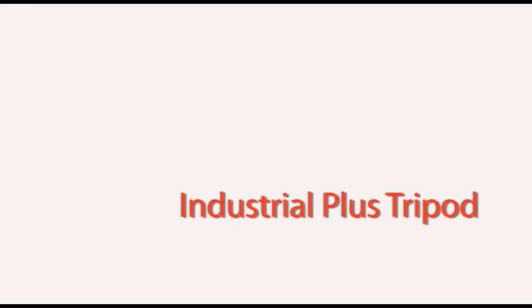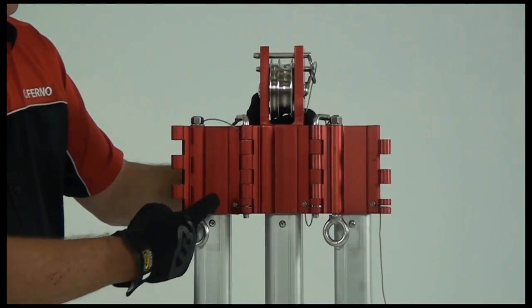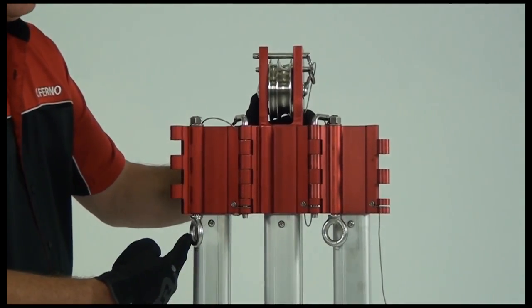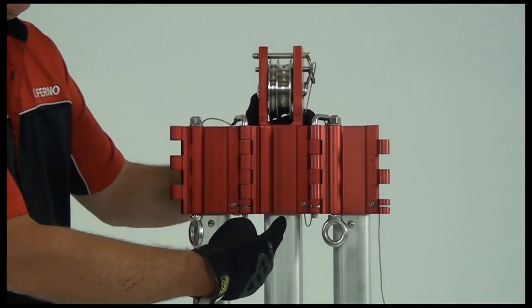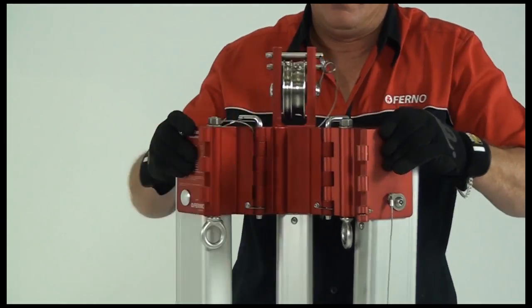The industrial plus is the next tripod up. It offers three rigging points and is configured with two standard legs with two load rated attachment points. A pulley leg is also provided with stainless steel pulley which takes fibre and steel rope.